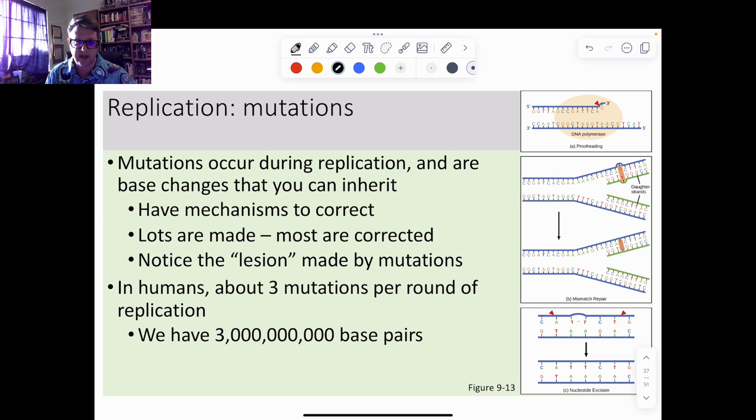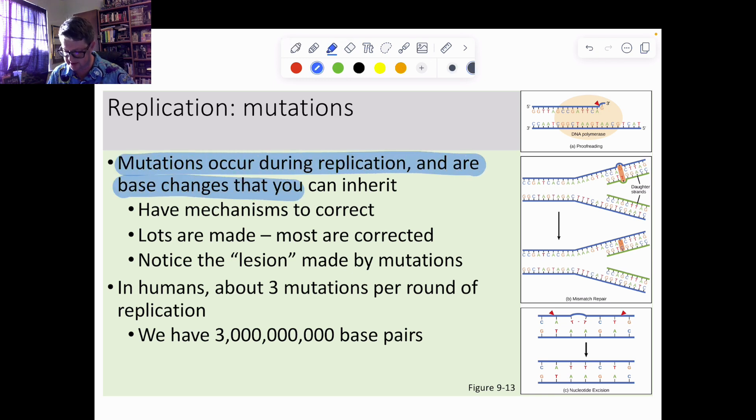During DNA replication, because we're adding in new nucleotides, one of the things that we have to worry about now is the fact that we could put in the wrong nucleotides. If you put in the wrong nucleotide in the wrong cell - so if you put in the wrong nucleotide in your skin, you're not passing your skin cells on to anyone else.